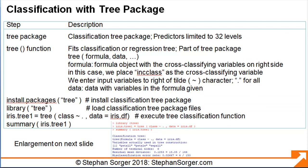To generate our classification tree, we install the TREE package. The TREE function takes as inputs the cross-classifying variable CLASS, as well as the dataset iris.df. We insert input variables to the right of the tilde delimiter character, which separates the output variable from the input variables. Since we wish to include all input variables, we enter a period to signify that R should use all variables. We assign the results to a variable we call iris.tree1. After loading the TREE package using the library function, we ask R for summary statistics using the summary function.